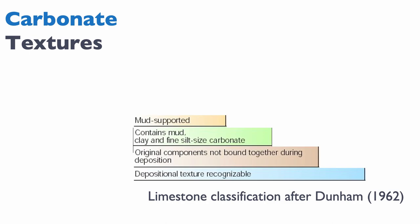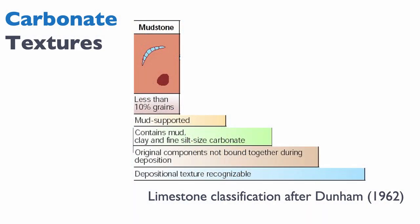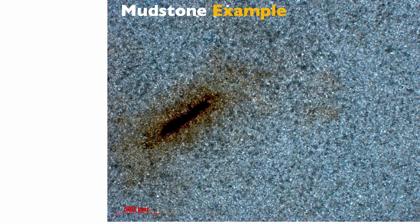What does mud supported mean? It means that the grains forming the rock are not touching each other — they're floating in mud. If that's the case, and you have less than 10% grain in your matrix, then we call this rock a mudstone. Here's an example: a rock composed almost exclusively of fine-grain micrite, with the exception of one reddish component whose identity is uncertain.